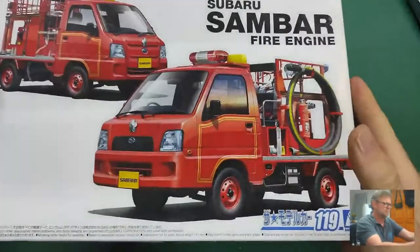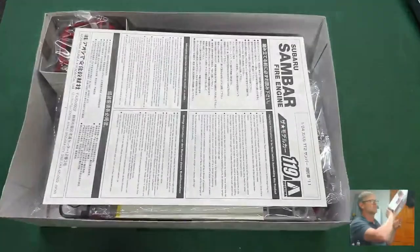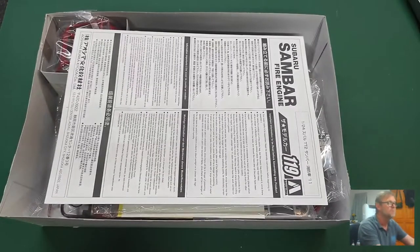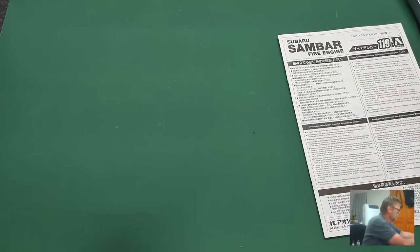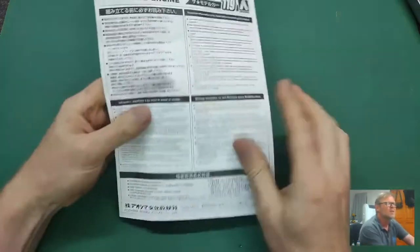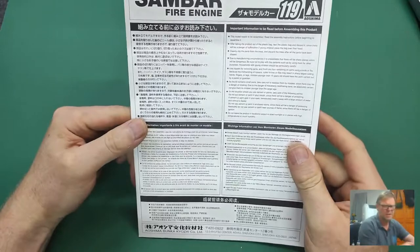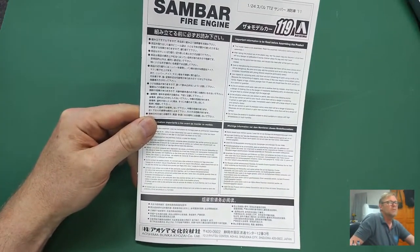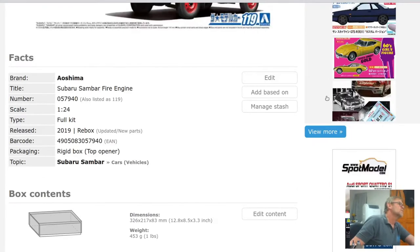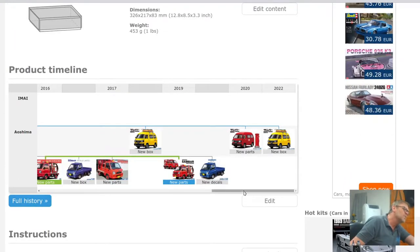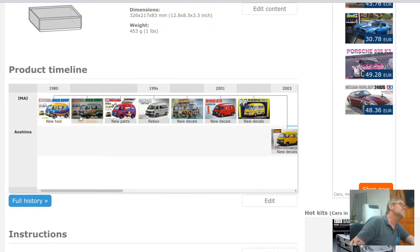I think we should open the box together. We have the instruction manual, and as we always do, we start with that. Here's what Scalemates tells us about it. This is a 2019 rebox of a kit which originally appeared to have been conceived in 1980 in a somewhat different form as a bus. Here you see it as a bus.